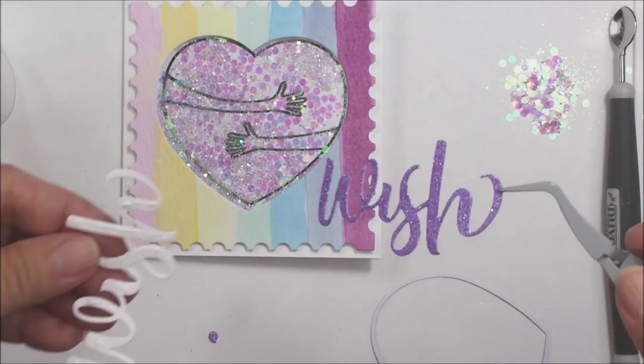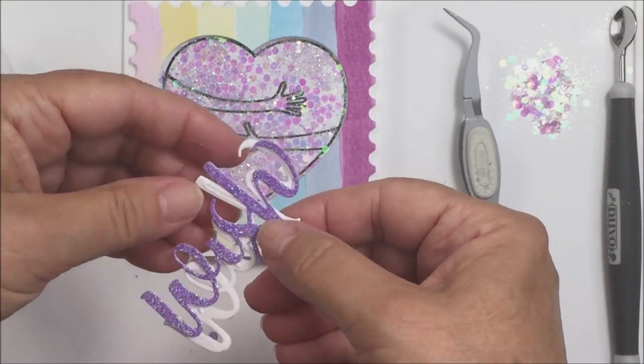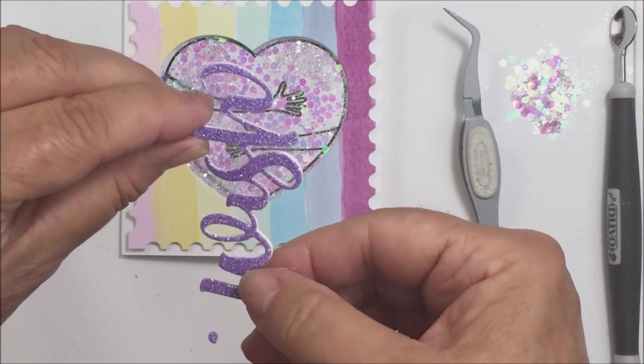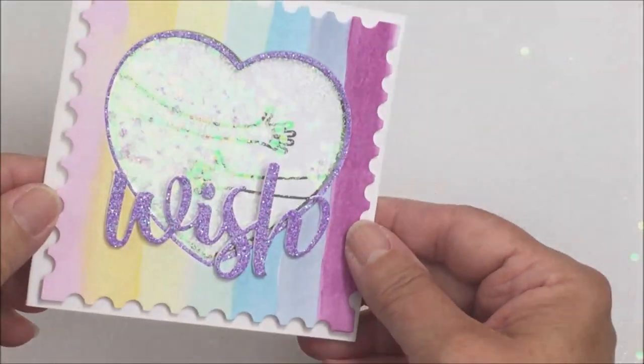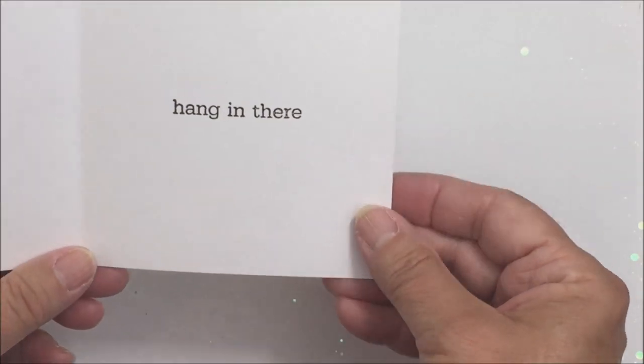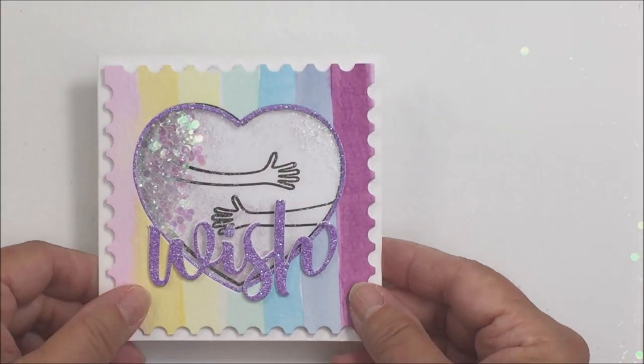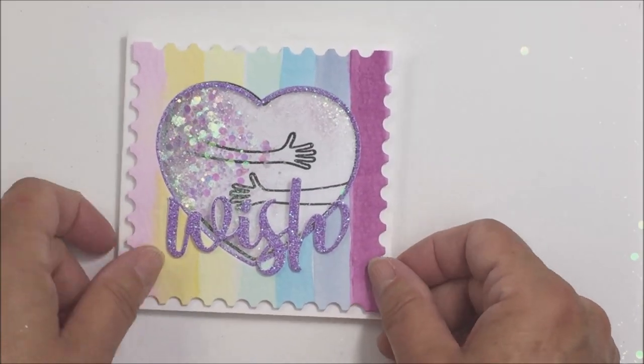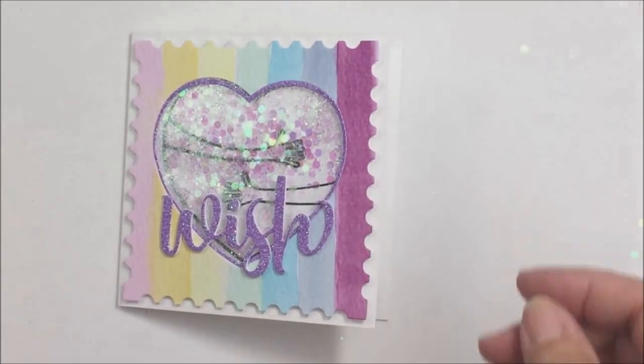I have taken the sentiment Hang In There from the Paper Hugs stamp set and I've stamped that on the inside of my card. I just wanted this to be an inspirational card for someone that might be struggling at this time. You know, it's a tough time, people are going through a lot of different things, and I just thought this was just a really happy fun card. Now I have linked up all of the products that I have used in the video down below. So if you check the Show More section, you'll be able to see all the different products that I've used today. I hope you enjoyed this and I hope to see you again here on the channel. Have an amazing day, stay safe, and I'll see you again. Bye bye.